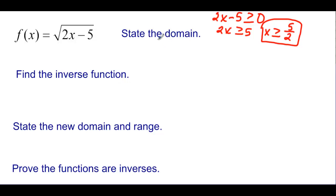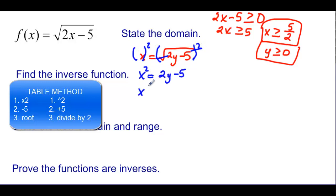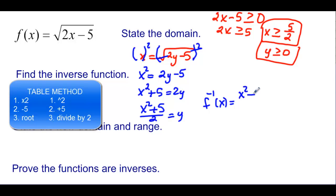All they wanted to know there was the domain. If we wanted to know the range: if we put 5/2 in, it's going to start at 0, so y is greater than or equal to 0 would be our range. Find the inverse function algebraically: x equals the square root of 2y minus 5. Square both sides to clear the square root, so x squared equals 2y minus 5. Add 5, then divide by 2: x squared plus 5 all over 2 equals y. So f inverse of x equals (x² + 5)/2.